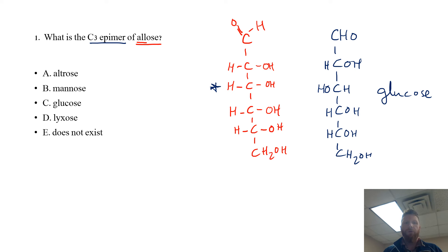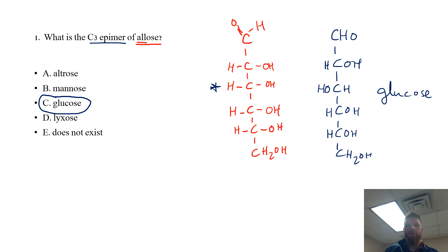You will not be able to answer this question without knowing your aldoses, and specifically your aldohexoses. But if you know those and know the relationships between those sugars, the first thing you'll recognize is this as glucose. So the correct answer for this question is C, glucose. I would argue that glucose is an essential sugar that you really should know — both the linear and cyclized forms of it — because it's going to follow you through metabolism in basically every class that succeeds this one.